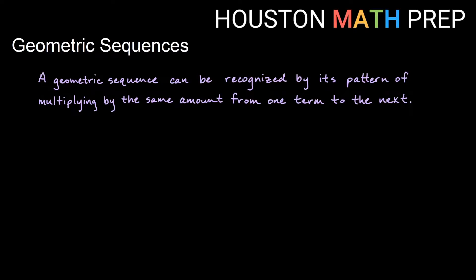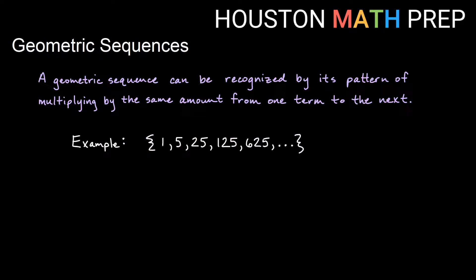Hey everyone, Houston Math Prep here to talk to you about geometric sequences and what those are. A geometric sequence can be recognized by its pattern of multiplying by the same amount from one term to the next. With arithmetic sequences, that was about adding and subtracting from one term to the next. Here we will know that something is a geometric sequence if we can recognize a pattern of multiplying from one term to the next.